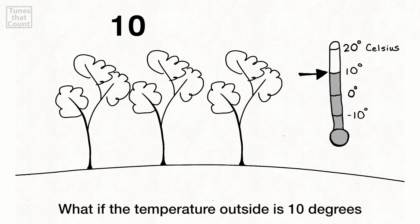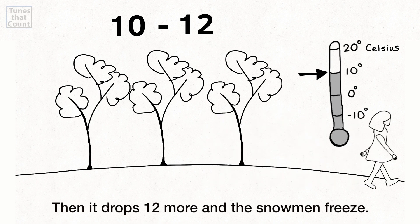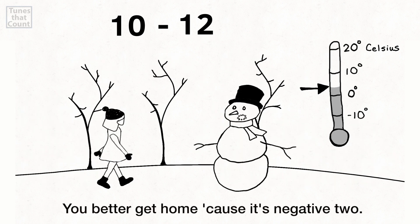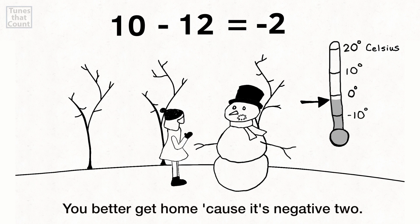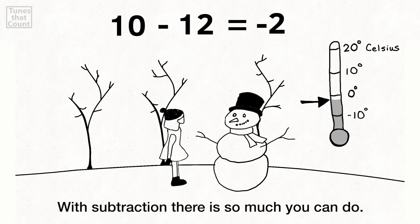What if the temperature outside is 10 degrees? Then it drops 12 more and the snowmen freeze. Better get home cause it's negative 2. With subtraction there is so much you can do.